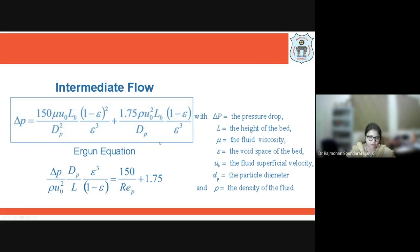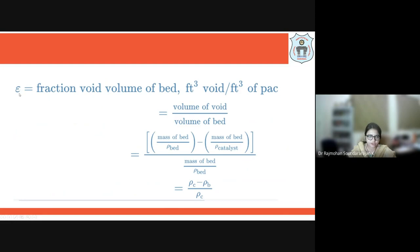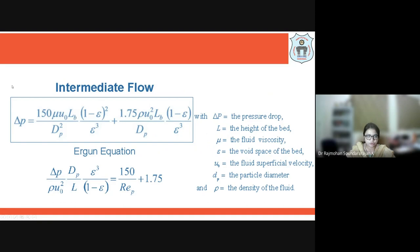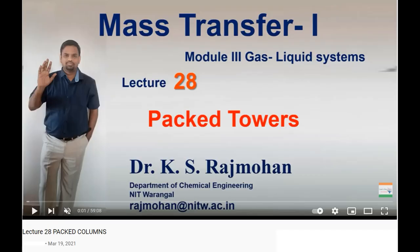This Ergun equation can also be written in a specific form. The voidage — also known as the fraction void volume of bed — is given by the volume of the void divided by the volume of the total bed. Voidage is the empty space present in the material and can vary from 0 to 1 depending on the type of porous material used. Using this equation to find the voidage and inputting it into the Ergun equation, we can find the pressure drop across the packed column.